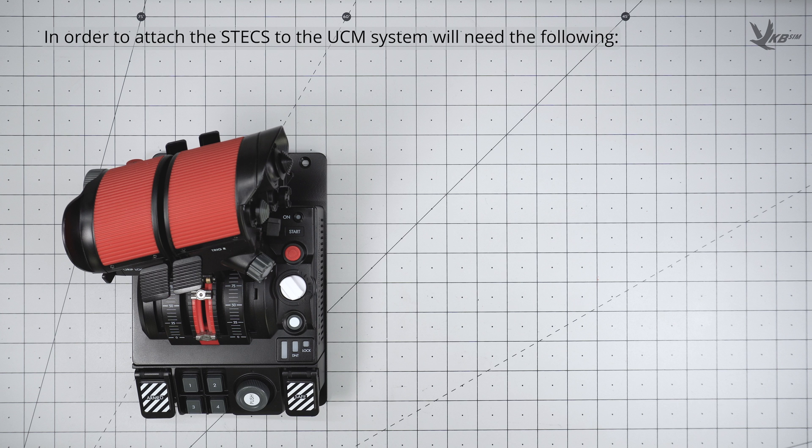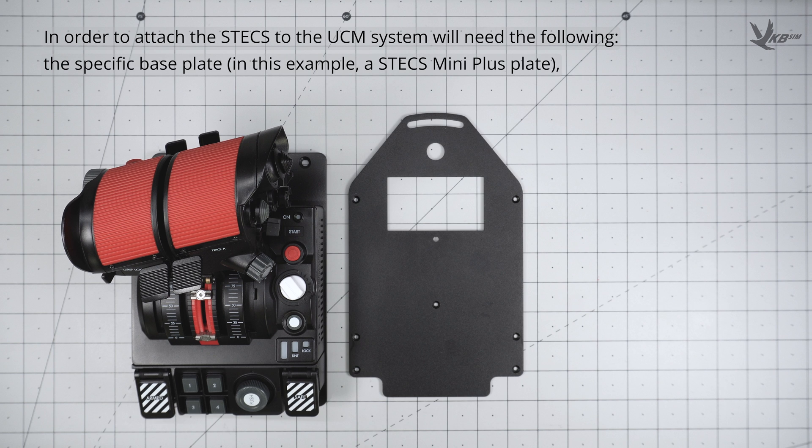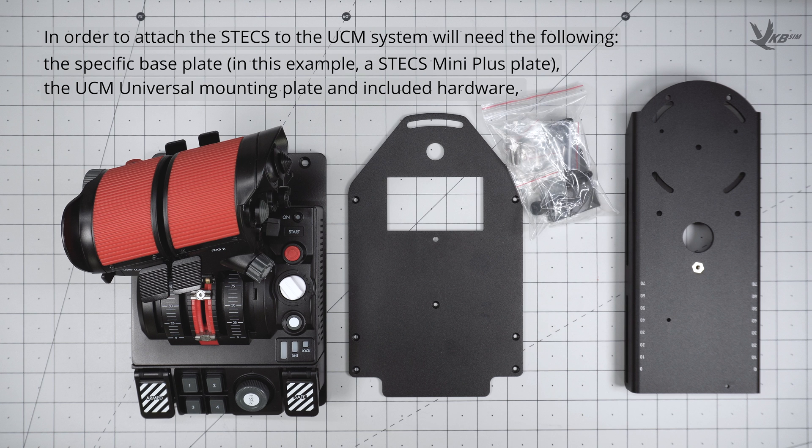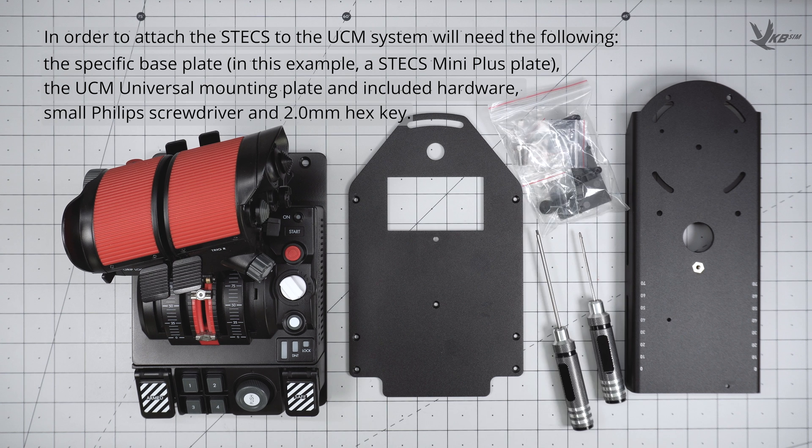In order to perform this procedure, you'll need the following: a specific UCM base plate for your model of STECS, the UCM universal mounting plate and its included hardware, a small Phillips head screwdriver, and a 2mm hex key.